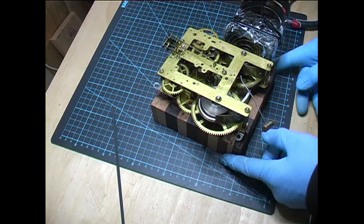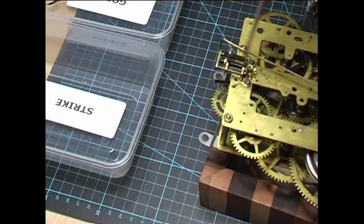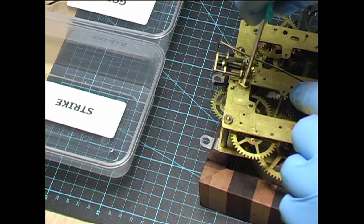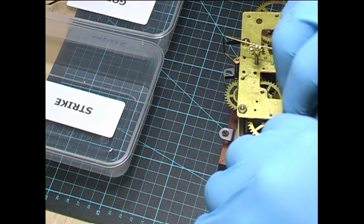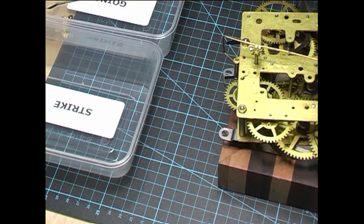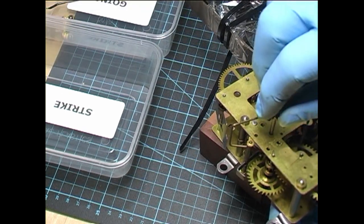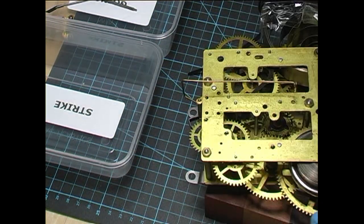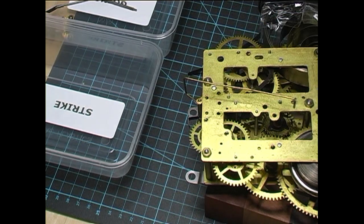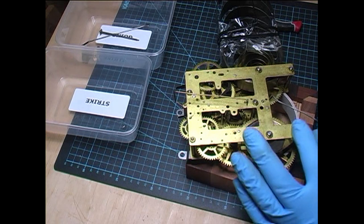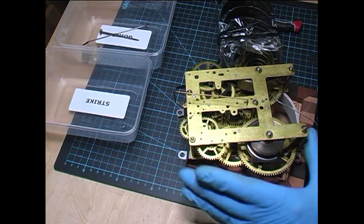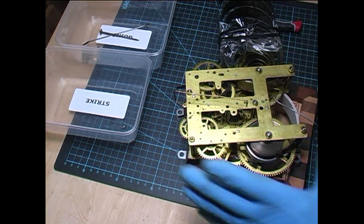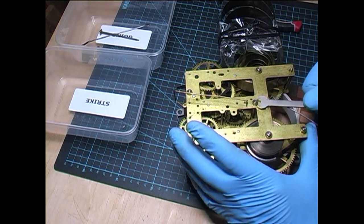We can now start taking the movement to pieces. First, we'll remove the crutch and pallets. We'll put them in our tray for the going side parts. That's our fast slow regulator. We'll pull that out. And then we'll loosen these five nuts. We'll loosen off the nuts using a five and a half mil spanner. Put them in a dish so we don't lose them.